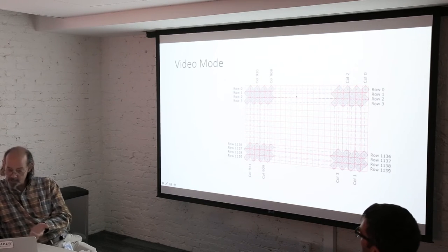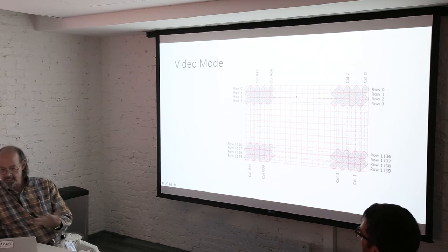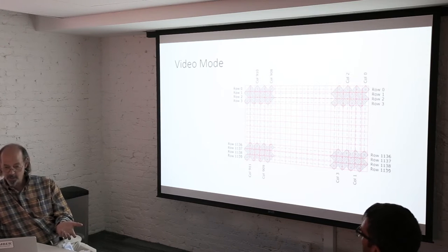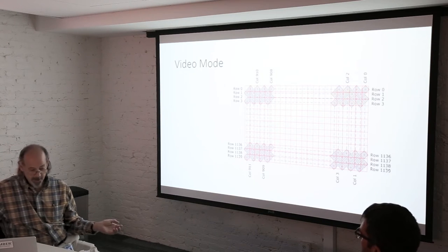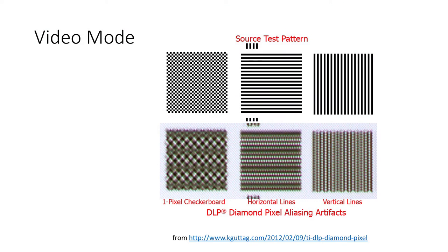And the only way that they can deal with that is to basically resample the incoming video stream to match the layout of the diamond pixels. And in order to minimize aliasing artifacts, they have to low-pass filter before they resample. The net result is we're throwing away resolution, and our images are getting smeared out.